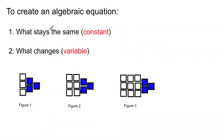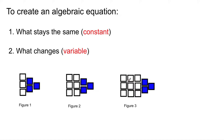To create an algebraic expression, you want to look at two things: one, what stays the same — which is a constant — and two, what changes — your variable. In this case, we have three figures, and we need to create an algebraic expression or pattern rule for these three figures. They can continue infinitely, and you'll know how many blocks are in each figure using the algebraic expression.